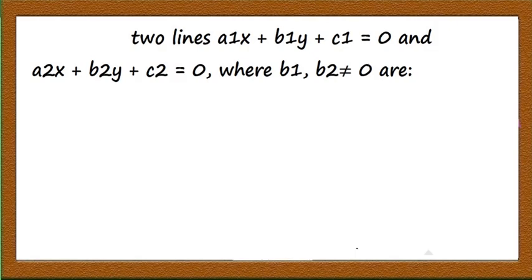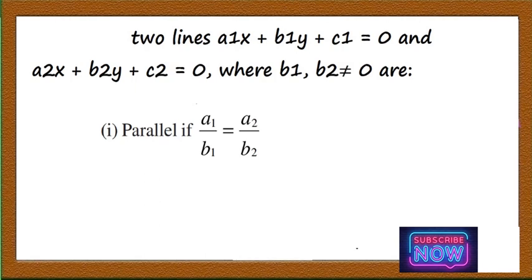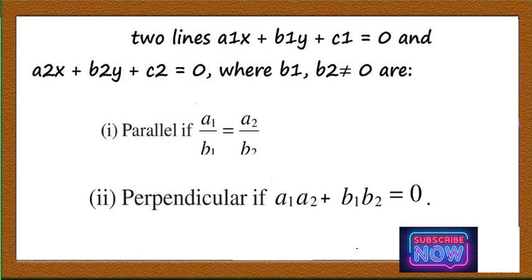Before that, remember this result: two lines a1x + b1y + c1 = 0 and a2x + b2y + c2 = 0, where b1, b2 ≠ 0, are parallel if a1/b1 = a2/b2, that is the slope of the first line −a1/b1 equals the slope of the second line −a2/b2. Similarly, the lines are perpendicular if a1·a2 + b1·b2 = 0. Remember these two results.